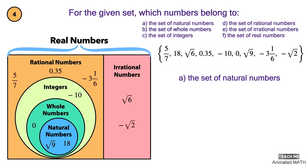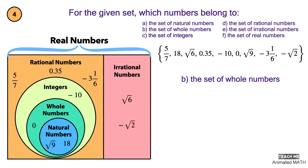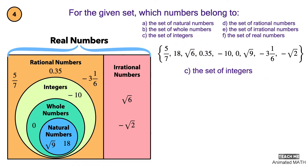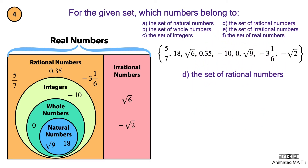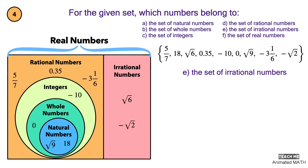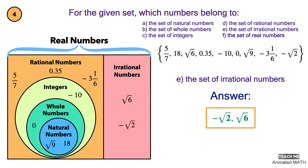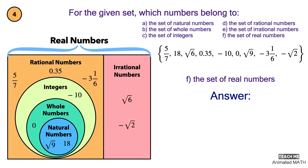The set of natural numbers contains square root of 9 and 18. The set of whole numbers contains 0, square root of 9, and 18. The set of integers contains negative 10, 0, square root of 9, and 18. The set of rational numbers contains negative 10, negative 3 and 1 sixth, 0, 0.35, 5 over 7, square root of 9, and 18. The set of irrational numbers contains negative square root of 2 and square root of 6. The set of real numbers contains all of the given numbers.